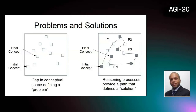In terms of conceptual space, a problem is defined as a gap between an initial set of concepts and a targeted set of final concepts. Assuming that a set of concepts can be represented as a concept itself, then the initial and final sets of concepts are both single points in conceptual space. A solution is then the reasoning through which the cognitive system can navigate between those two points.